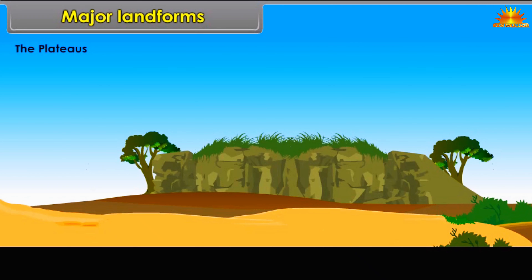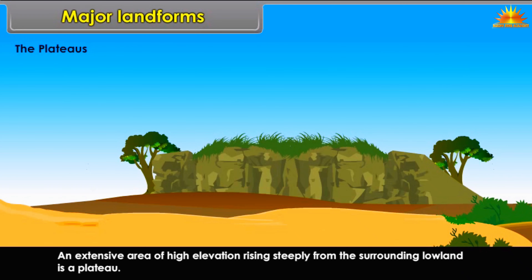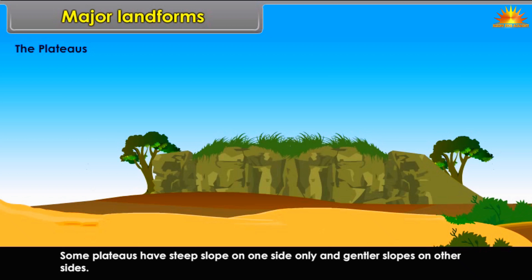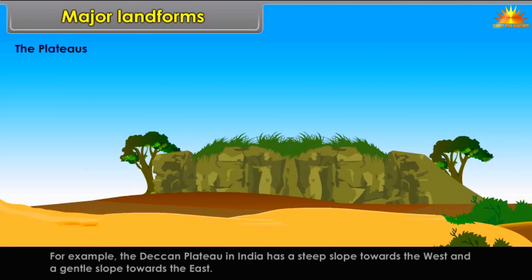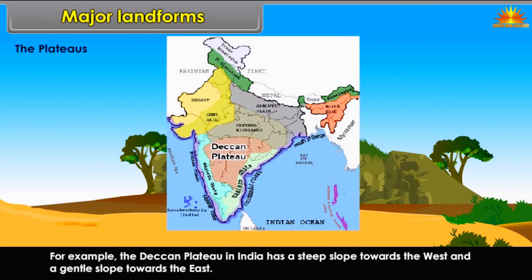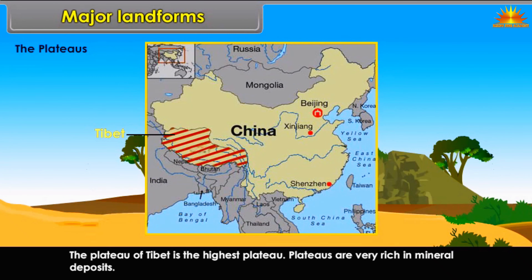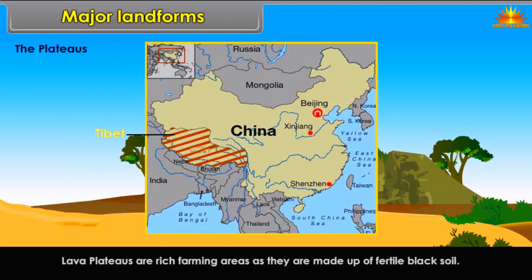A plateau is an extensive area of high elevation rising steeply from the surrounding lowland. Some plateaus have steep slopes on one side only and gentler slopes on other sides. For example, the Deccan Plateau in India has a steep slope towards the west and a gentle slope towards the east. The plateau of Tibet is the highest plateau. Plateaus are very rich in mineral deposits, and lava plateaus are rich farming areas as they are made up of fertile black soil.